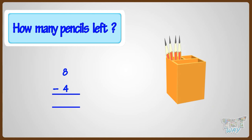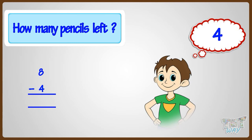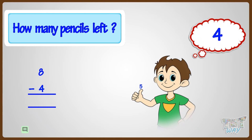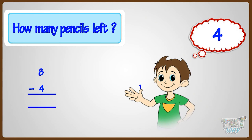So we have to subtract four from eight. Think the smaller number — that is four. And now count up to eight on your fingers: five, six, seven, eight. Now count the fingers: one, two, three, four.